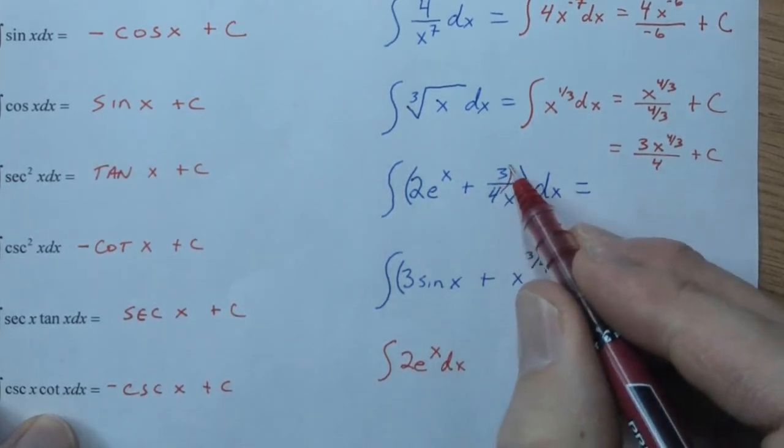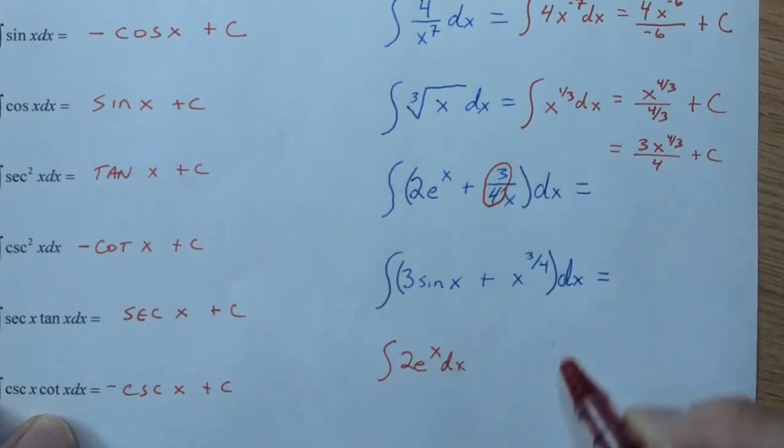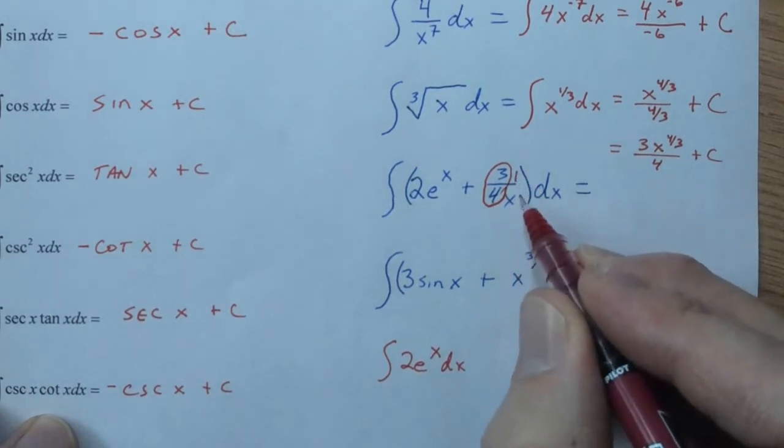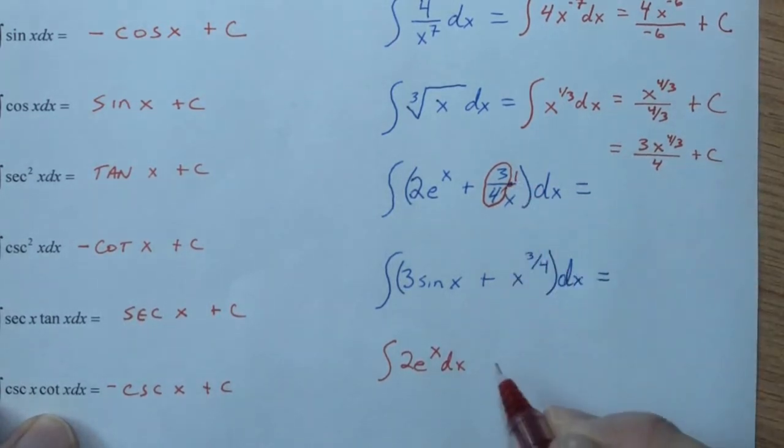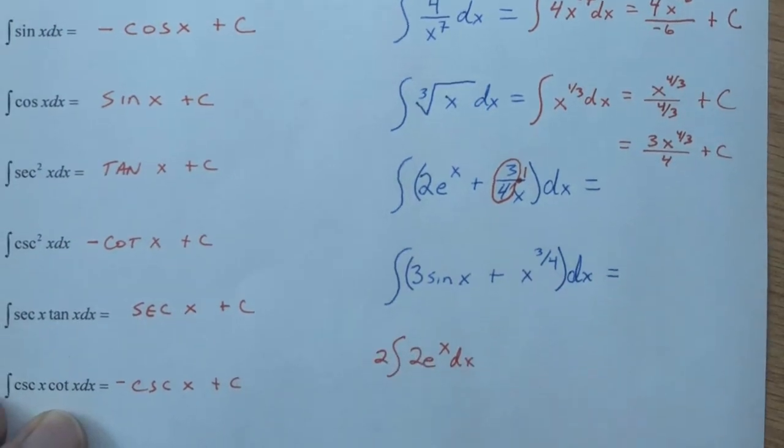Well, can you see how the 3 quarters is a coefficient? We're doing 3 quarters times 1 over x. So, what we can do is, in the same manner that we can move the 2 out front of e to the x, we can move the 3 quarters out front of the second part, leading us with 1 over x dx.